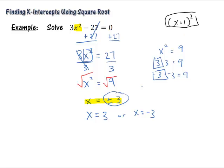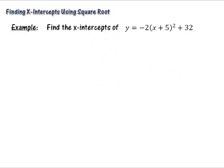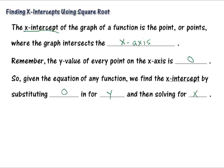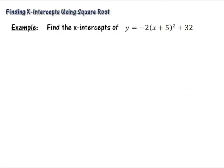Alright, so now that we've reviewed that, we can go into actually finding the x-intercept using square roots. So that's our next step. So if you remember back, we said that we find the x-intercept or intercepts by substituting 0 in for y and then solving for x. So that's what we're going to do in this problem.